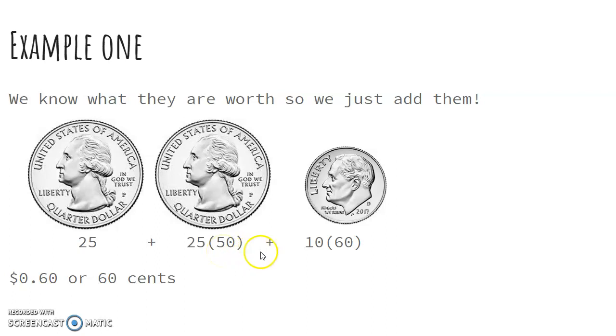And then I'm going to add my dime, which adds 10 more. So I have 50 plus 10, which gives me 60. So right here, I have 60 cents. And I can write it either one of these two ways.